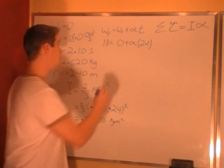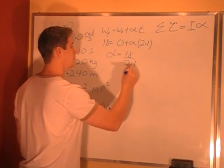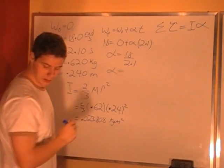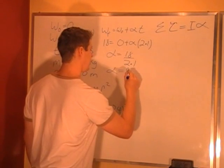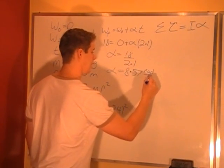We just divide 2.1 over. Alpha equals 18 over 2.1. Alpha turns out to be 8.57 radians per second squared.